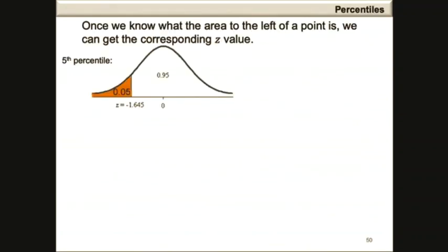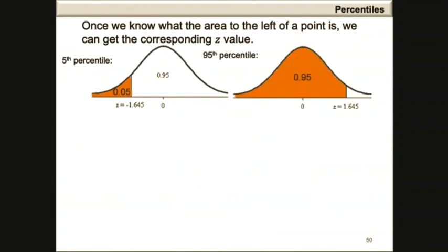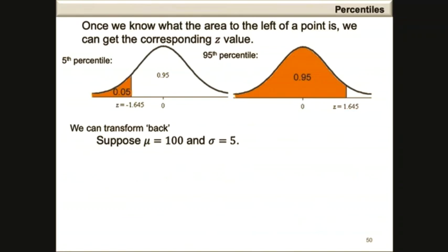If we consider the 5th percentile, the area to the left of the z-value is 0.05, whereas for the 95th percentile, the area to the left of z is 0.95. Once we find the z-values, we can transform back to obtain the corresponding x-value. Suppose the population mean is 100 and the population standard deviation is 5.